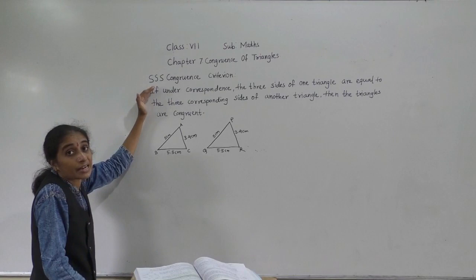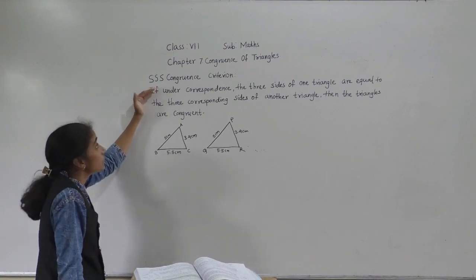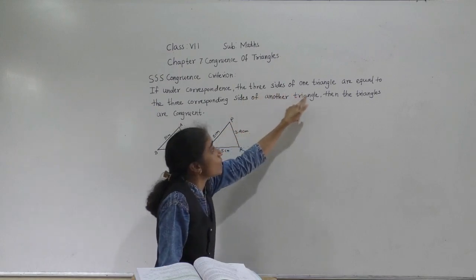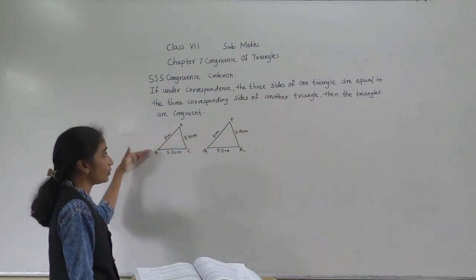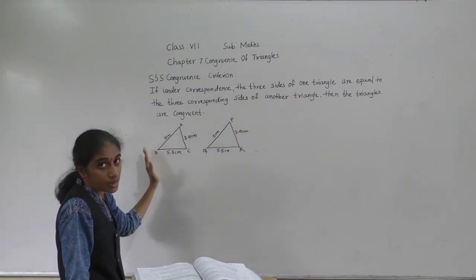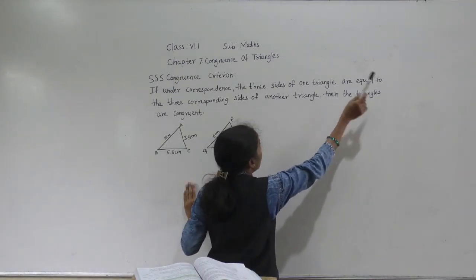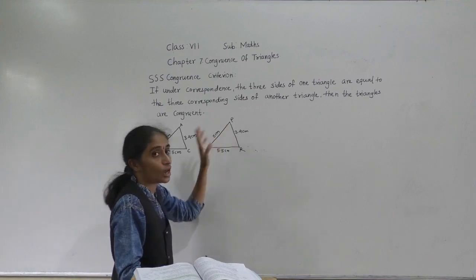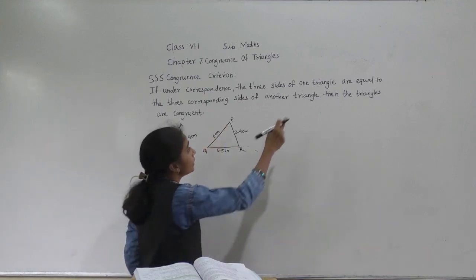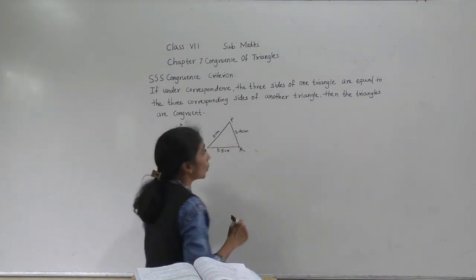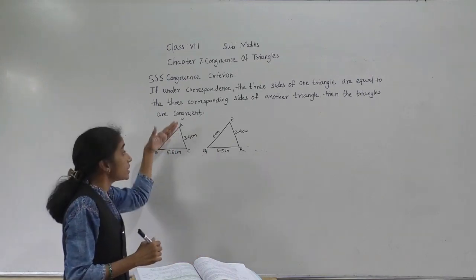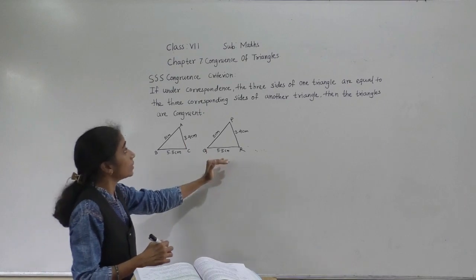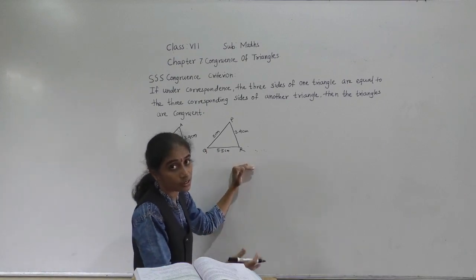Now what this criterion shows: if under correspondence, the three sides of one triangle are equal to the three corresponding sides of another triangle, then the triangles are congruent. Means three sides of one triangle are equal to the three corresponding sides of another triangle.